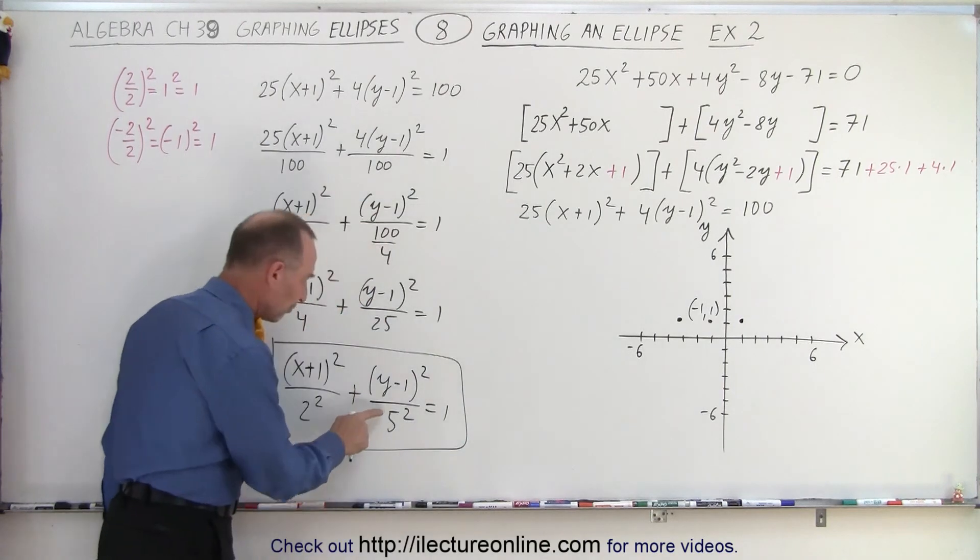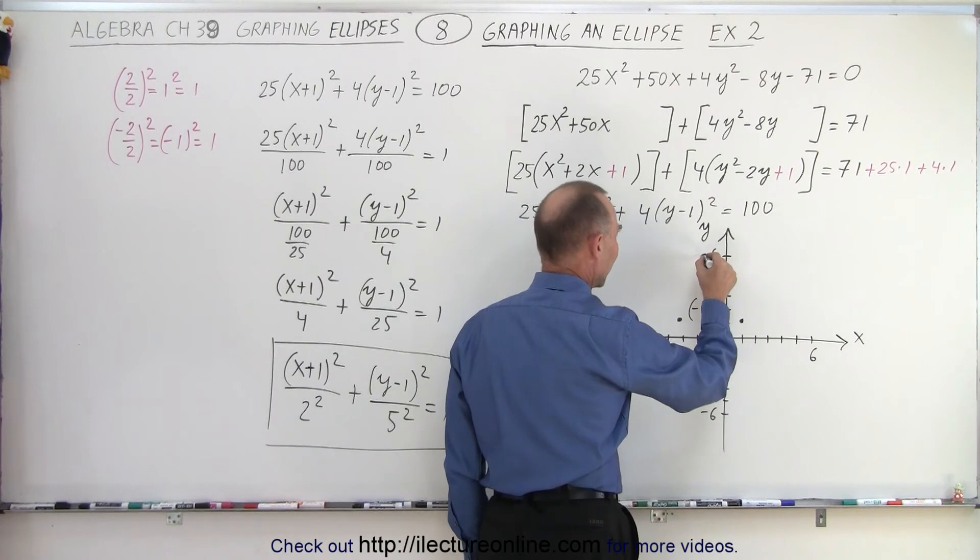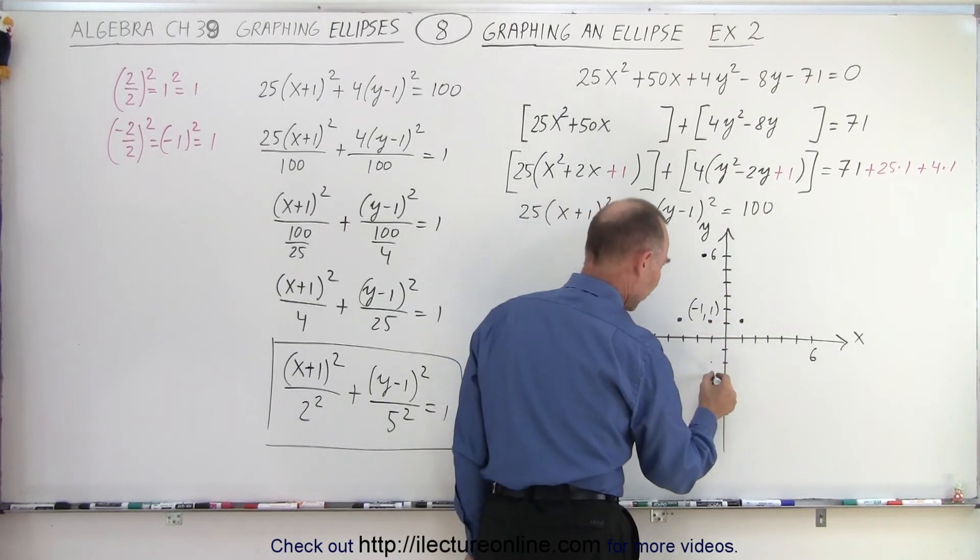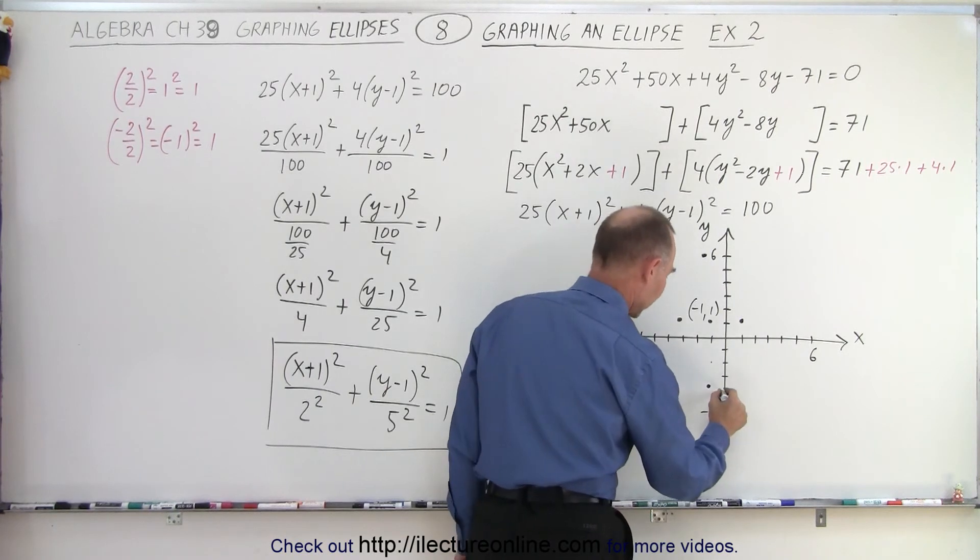In the y direction we move up 5 and down 5. So 1, 2, 3, 4, 5. And 1, 2, 3, 4, 5. This would be at -4, like that.